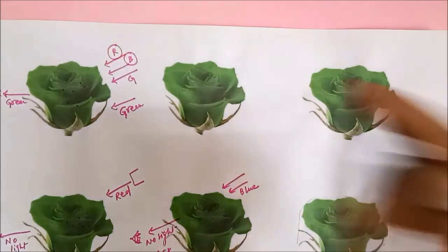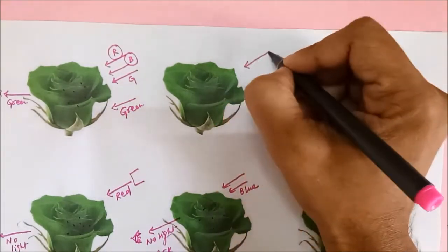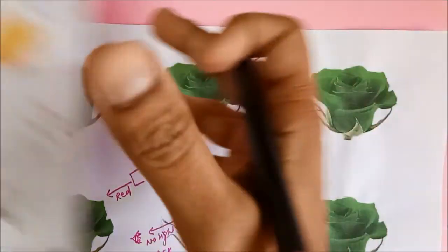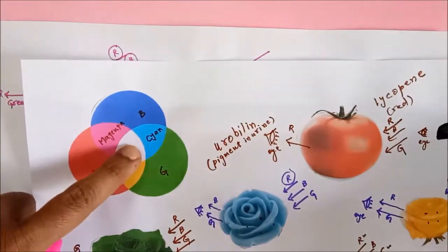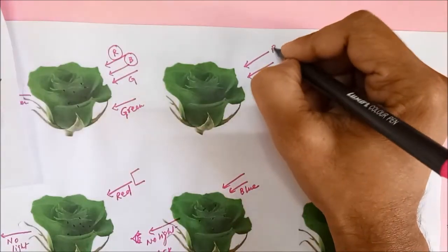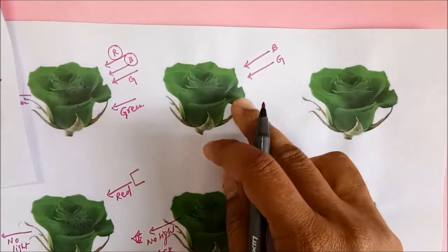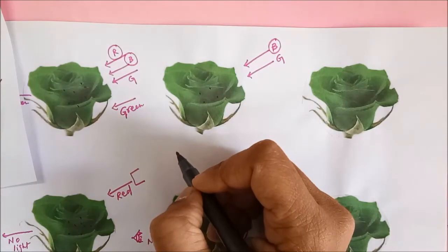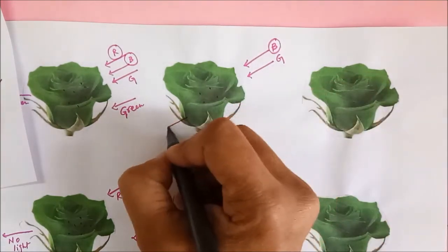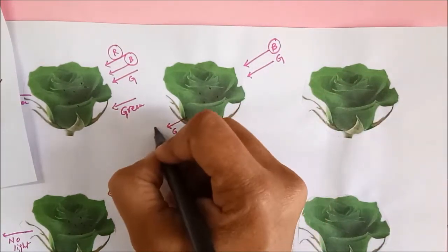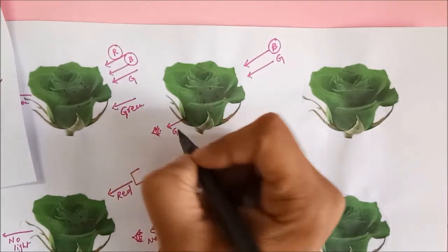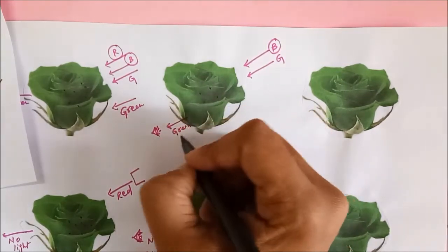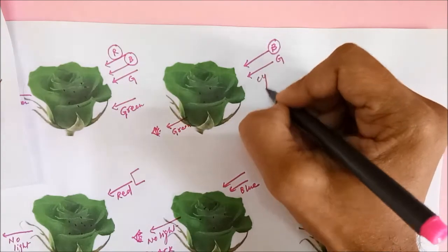Let us impart cyan light on it. Cyan light is a secondary color. Cyan is made up of blue and green. We have already discussed that these pigments absorb blue color. So the green does not get absorbed. The green is reflected and finally comes to our eye. So this rose appears green in cyan light.